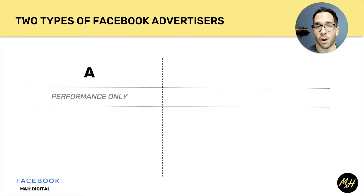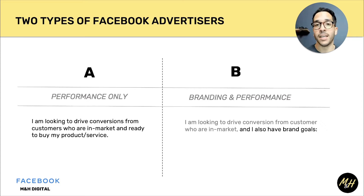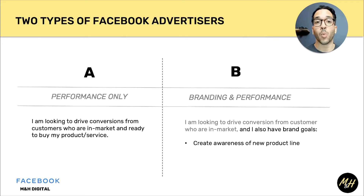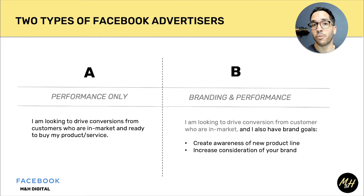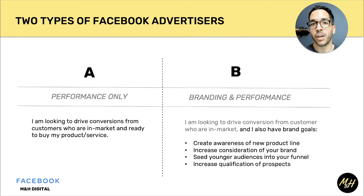From my perspective there are two types of Facebook advertisers. Number one, which I believe most people watching this are, is performance-only focused. Number two is branding and performance advertisers. Performance-only would be someone looking to drive conversions from customers who are in-market and ready to buy your product or service right now. The other type wants not only performance marketing but also brand-specific goals — creating awareness of a new product line, increasing consideration for people who might not be ready to buy now but could be in three to ten months, seeding younger audiences, or even a car purchase scenario.